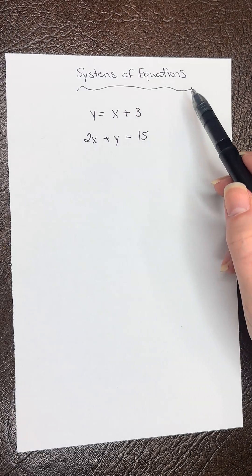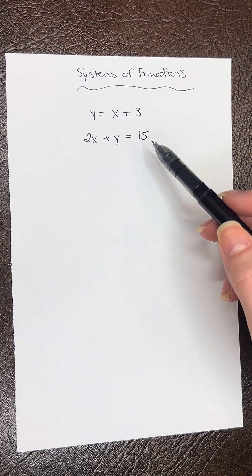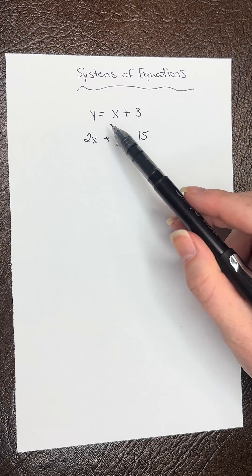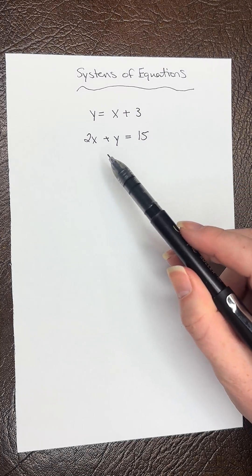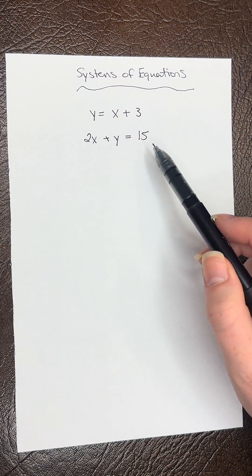Today, we're going to learn how to solve systems of equations using substitution. So we have two equations here. We have y equals x plus 3, and we have 2x plus y equals 15.